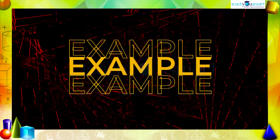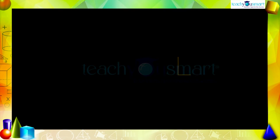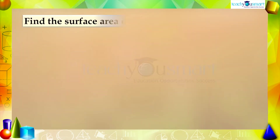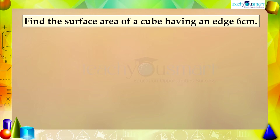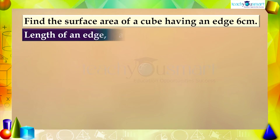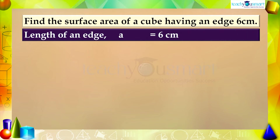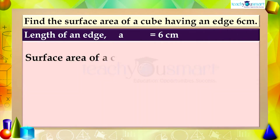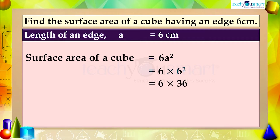Let's take an example. Find the surface area of a cube having an edge of 6 centimeters. Given that the length of an edge a = 6 cm, therefore surface area = 6a² = 6 × 6² = 6 × 36 = 216 square centimeters.